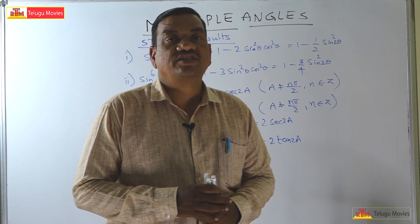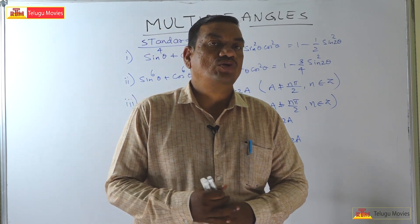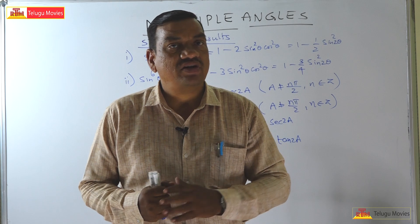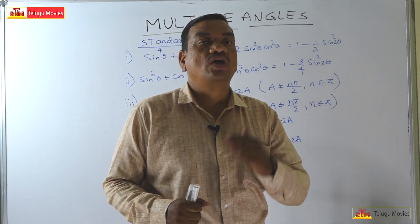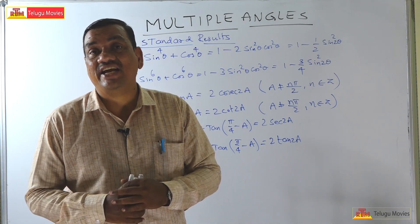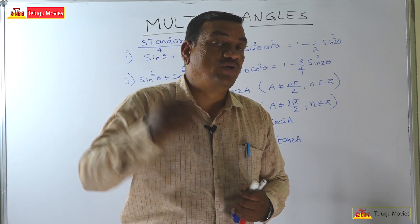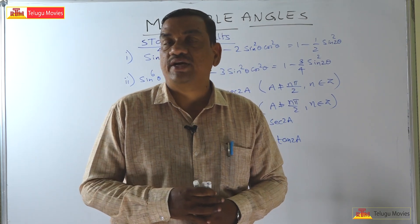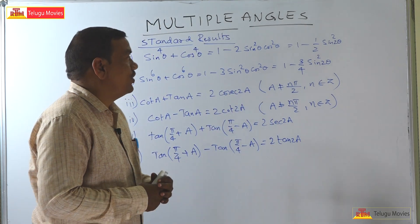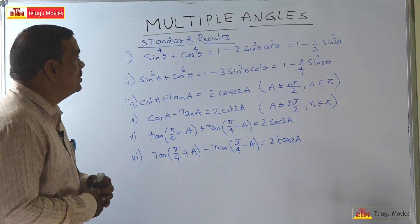Dear students, welcome to today's class. Over the last few days I have explained multiple and submultiple angles. In yesterday's class I gave standard formulas for sin 2A, cos 2A, tan 2A, cot 2A with their derivations, sin 3A, cos 3A, tan 3A and their derivations, and submultiple angle formulas like sin A = 2 sin(A/2) cos(A/2). In this class I am going to explain some more standard results in multiple and submultiple angles.